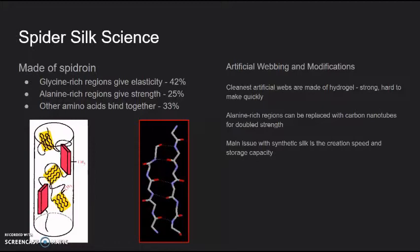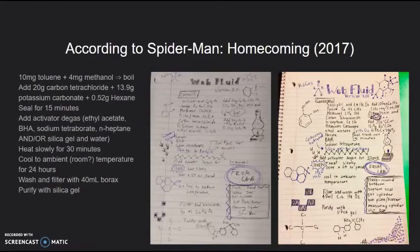Artificial webbing and modifications: The cleanest artificial webbings are made of hydrogel - strong but hard to make quickly. Alanine-rich regions of the spiderweb can be replaced with carbon nanotubes for doubled strength. Now the main issue with synthetic silk is the creation speed and the storage capacity.